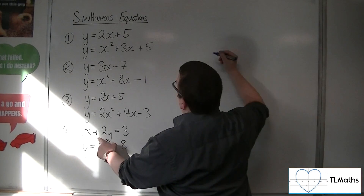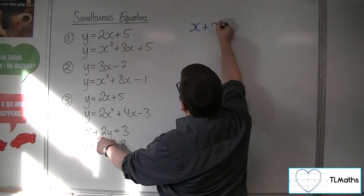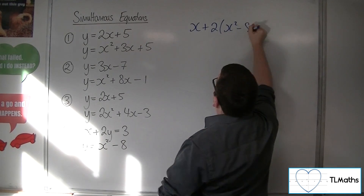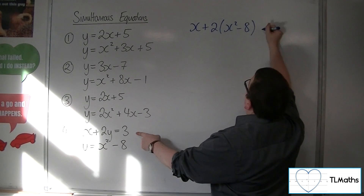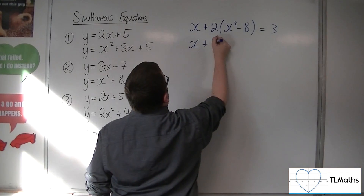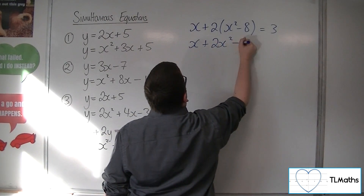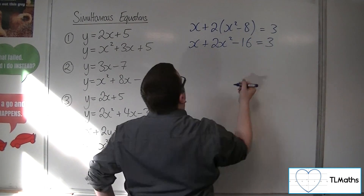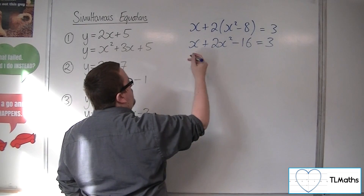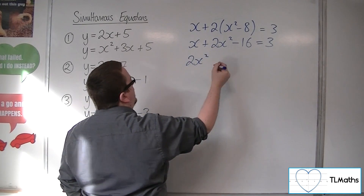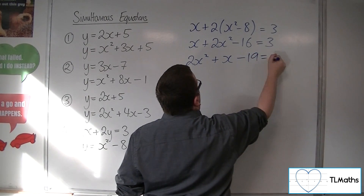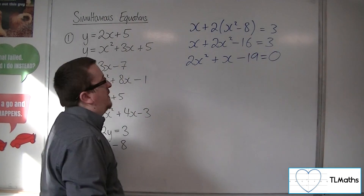Let's substitute y equals x squared minus 8 into x plus 2y equals 3. So we have x plus 2 lots of (x squared minus 8) equals 3. Expanding that bracket and moving everything to the left-hand side — keeping the plus x and subtracting 3 from both sides — gives 2x squared plus x minus 19 equals 0.